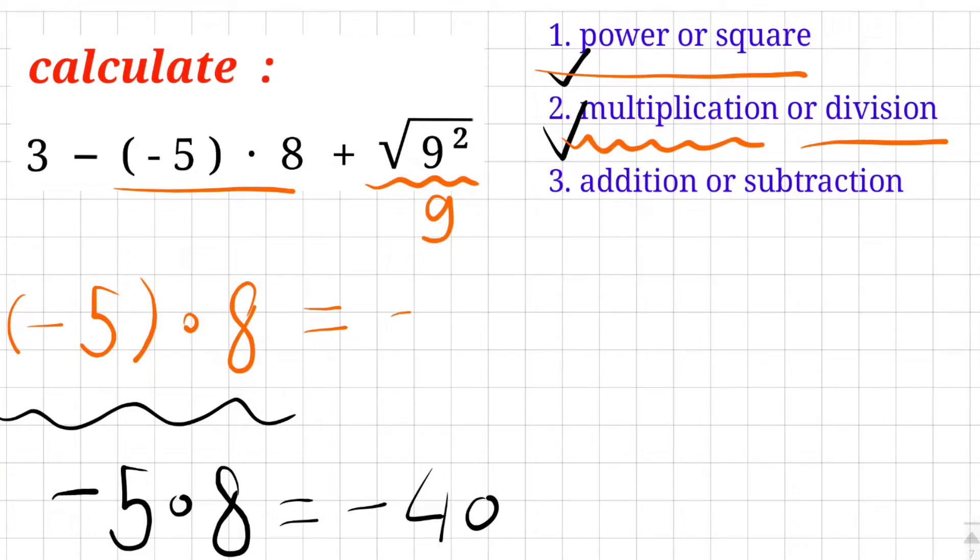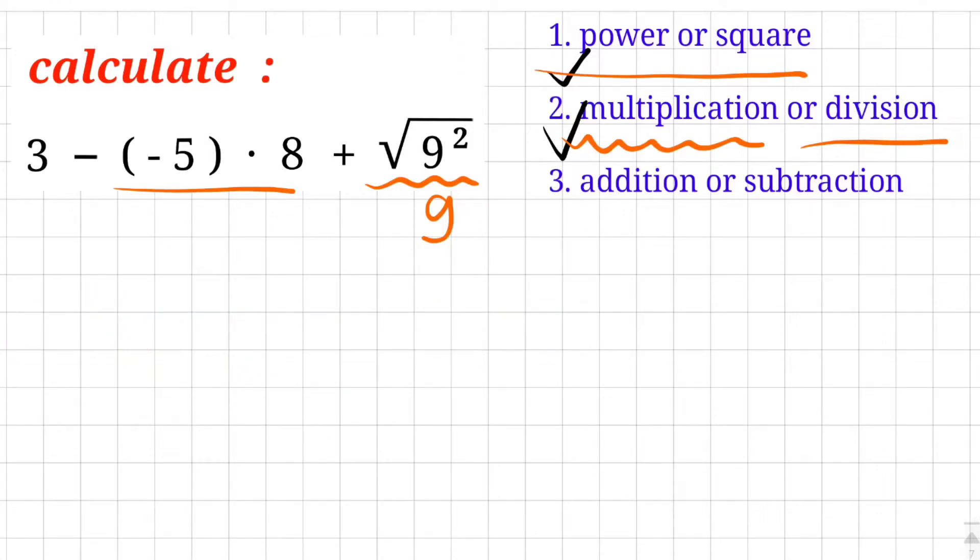So the second step is solved. And then to find the additions or the subtractions. We pay attention to the minus or the plus. Here is a minus and here is a plus. The minus is between the number 3 and the multiplication. And the plus is between the multiplication and the square.